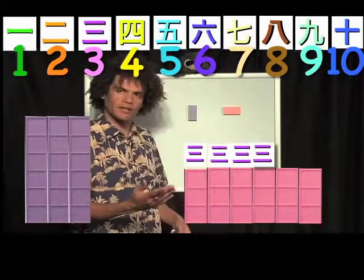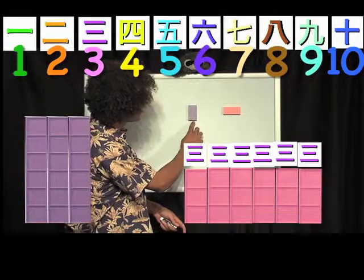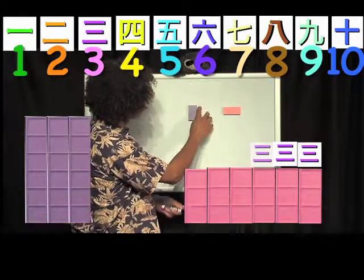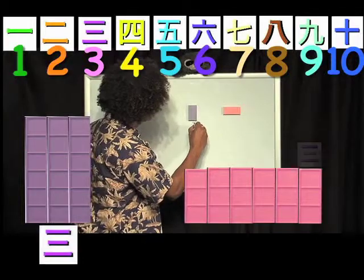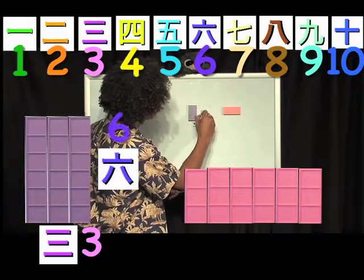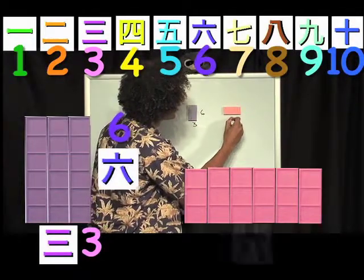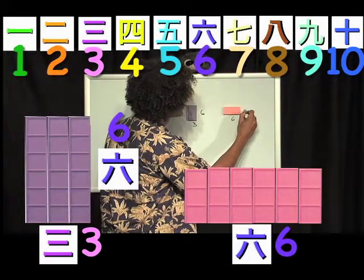For a small child or student, we can count this side: one, two, three. And we can see that this side is one, two, three, four, five, six. Three, six. And here I see it's six threes.